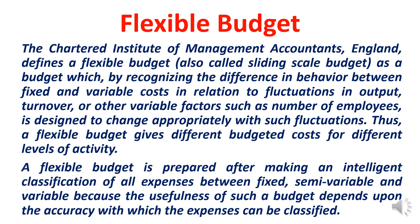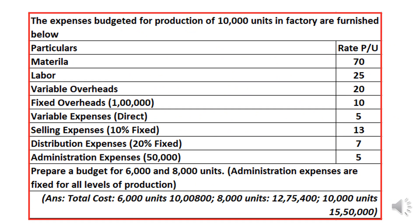Now we'll take up the first problem. Expenses budgeted for production of 10,000 units: material ₹70, labor ₹25, variable overheads ₹20 per unit. Fixed overheads ₹1 lakh (₹10 per unit). Variable expenses direct ₹5. Selling expenses ₹13 per unit — 10% fixed, 90% variable. Distribution expenses ₹7 per unit — 20% fixed, 80% variable. Admin expenses ₹50,000 (fixed). Prepare budget for 6,000 and 8,000 units.